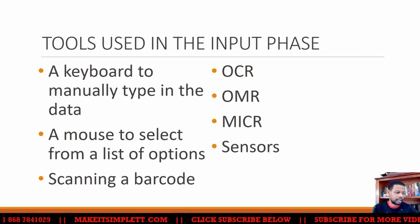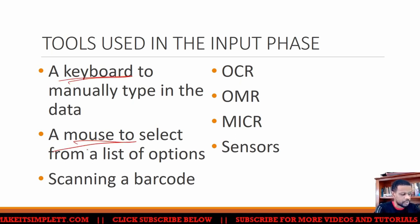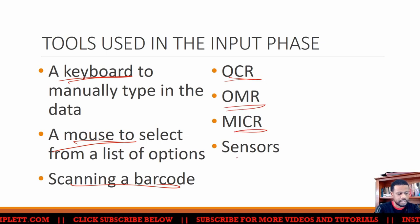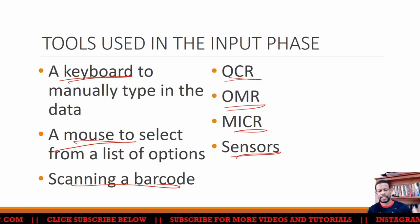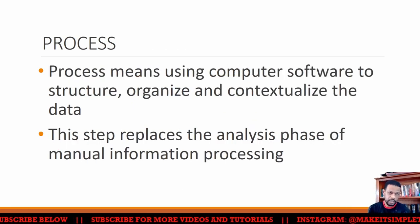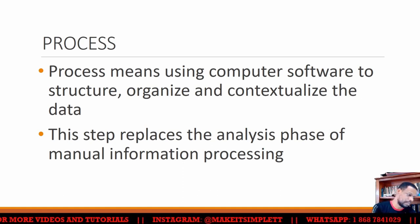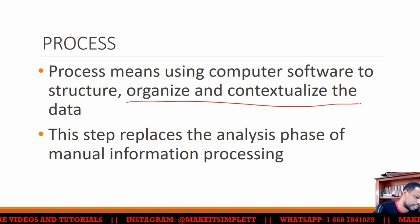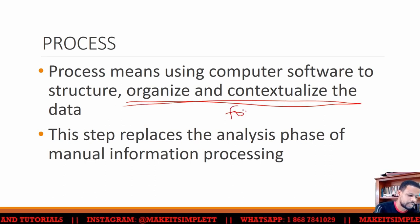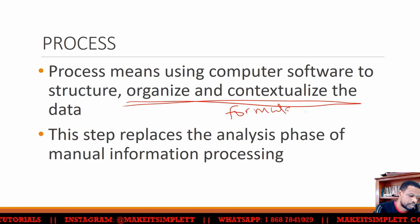Tools used in the input phase include a keyboard to type, a mouse, scanning a barcode, or using OCR — all those things get the information into the system. Once you get the information in, you can go through the process phase. The process phase allows you to organize the data — the computer will do the organization and contextualizing with formulas, replacing the manual analysis.